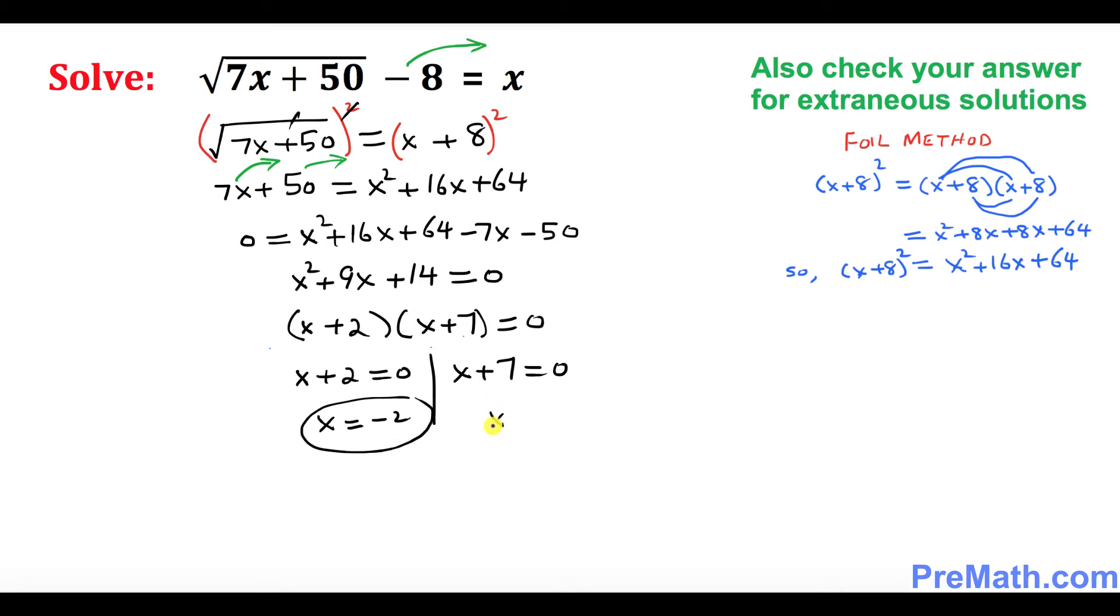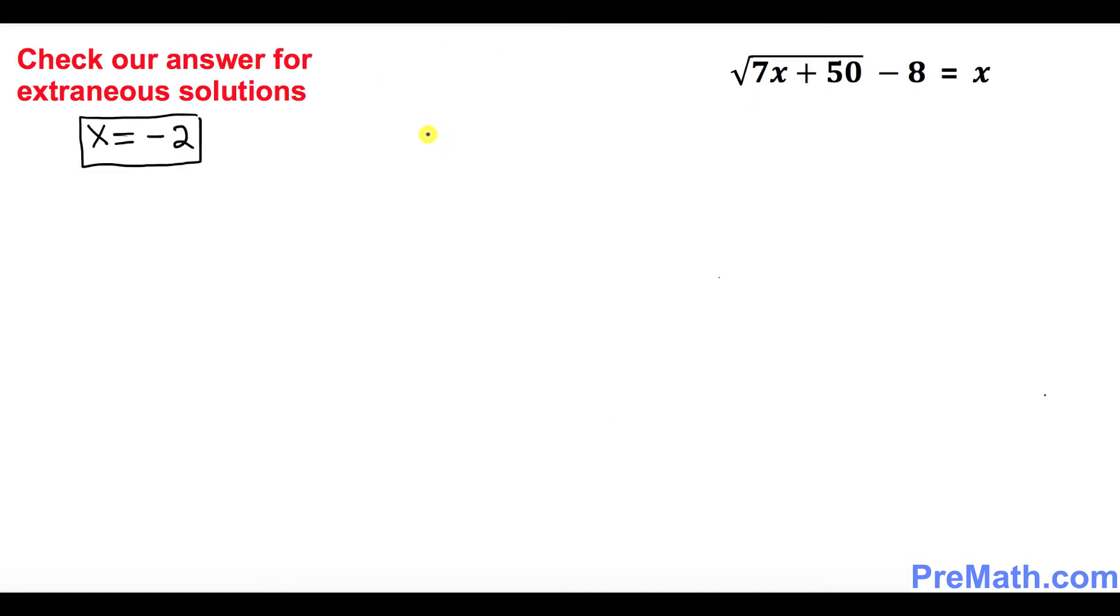Now we're going to check our answer for any extraneous solution. Let's check first x equals negative 2. We plug it in wherever you see x. So this is going to be square root of 7 times negative 2 plus 50, minus 8. Is it equal to negative 2? Square root of negative 14 plus 50 minus 8. That's square root of 36 minus 8. That's 6 minus 8.